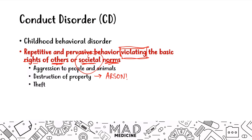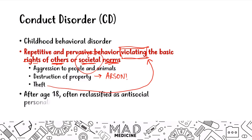They could also be involved in theft. That makes sense because these kids don't really understand that they are violating the rights of others. They're stealing because they think they can. After the age of 18, conduct disorder is reclassified as antisocial personality disorder — and that's what I meant by the fourth disorder that's kind of related to childhood behavioral disorders. If the child is under 18 years old, they are by default conduct disorder.